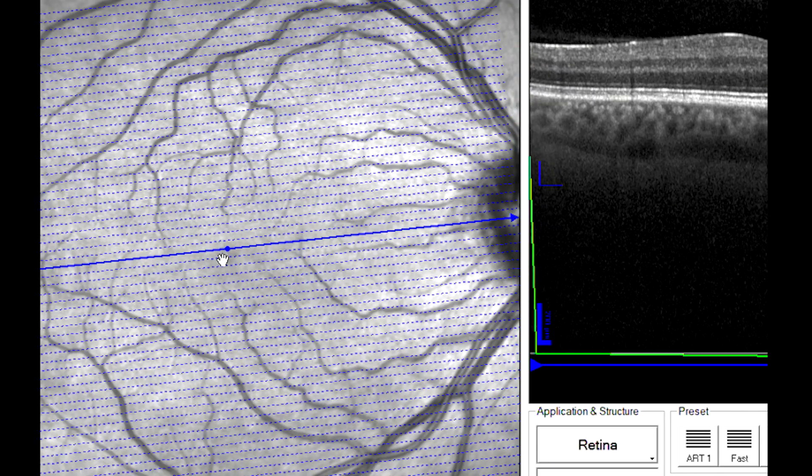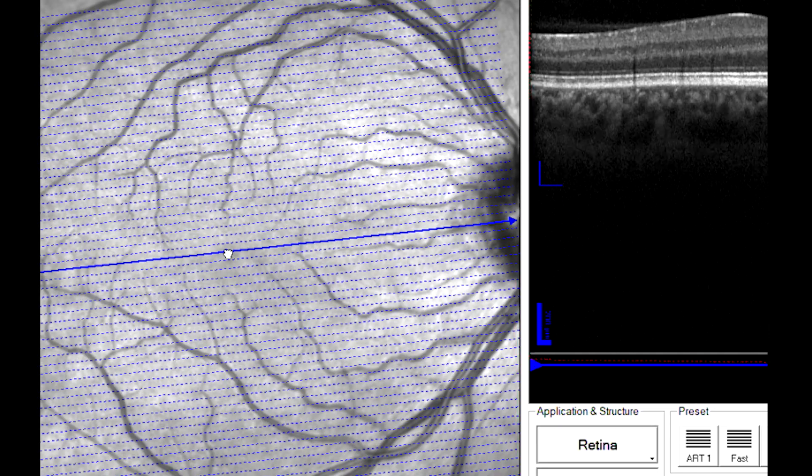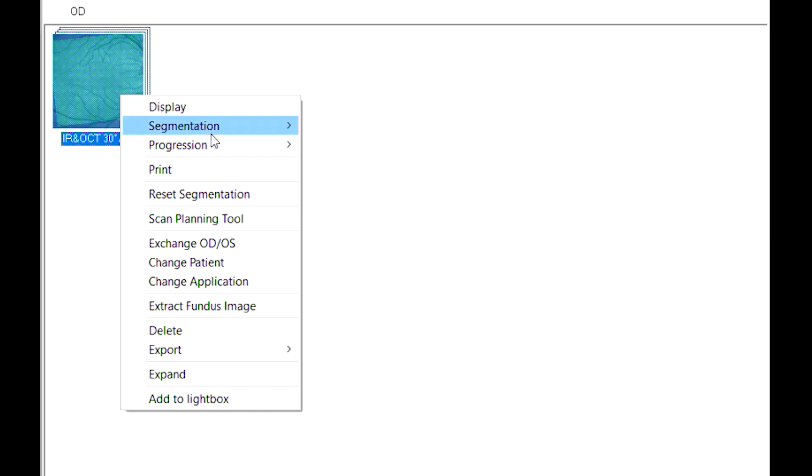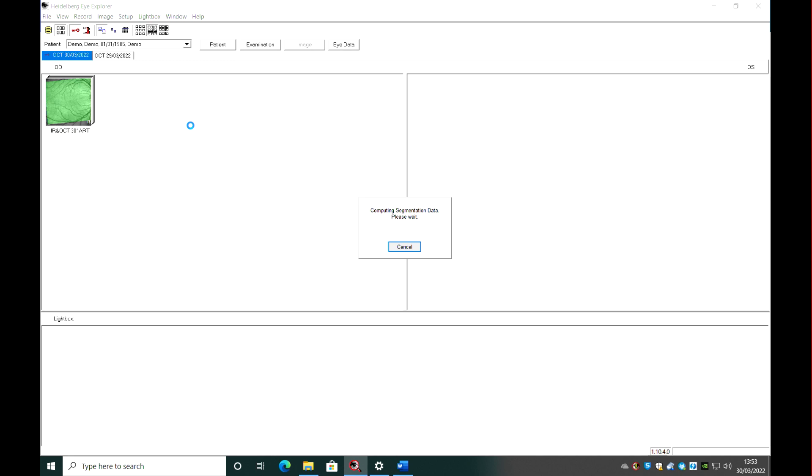Before individual layer analysis can be performed, the image must be fully segmented. All images in the time series must be segmented in order to perform comparative layer analysis. It is best practice to do this immediately following capture but can be done at any time.